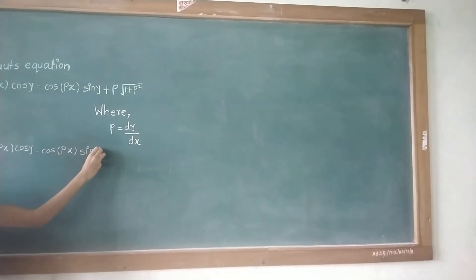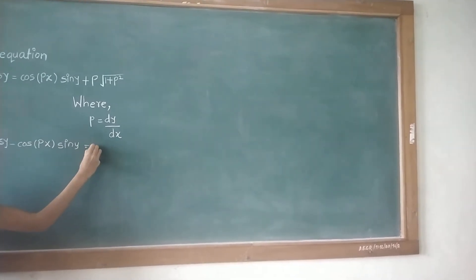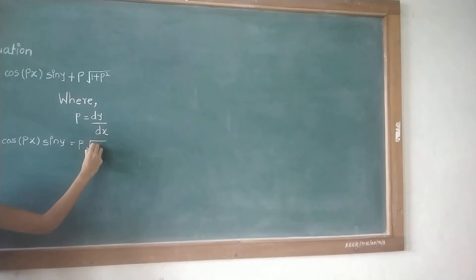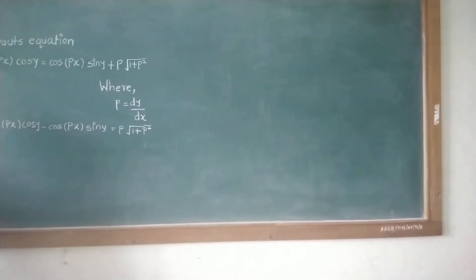For solving, write this equation as sin(px)cos(y) - cos(px)sin(y) = p√(1+p²).